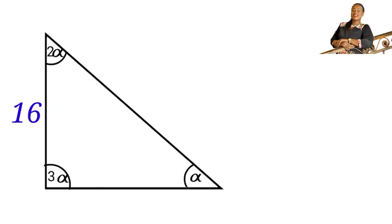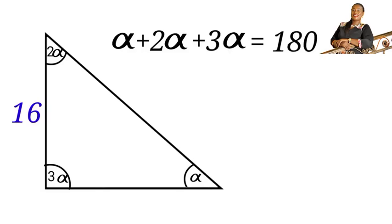The sum of angles in a triangle is equal to 180 degrees. So here, alpha plus 2 alpha plus 3 alpha equals to 180 degrees. When we simplify it, we will have 6 alpha equals to 180 degrees. We divide both sides by 6. We will have alpha equals to 30 degrees. So the value of alpha is 30.